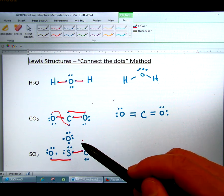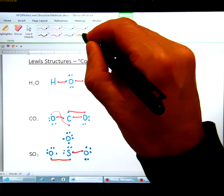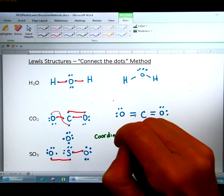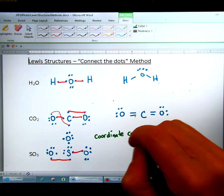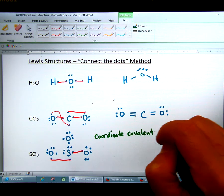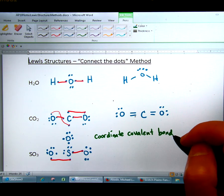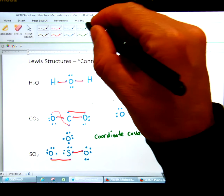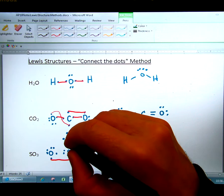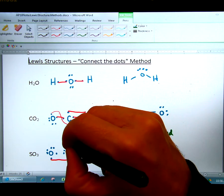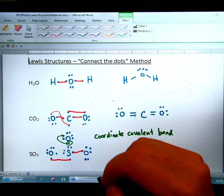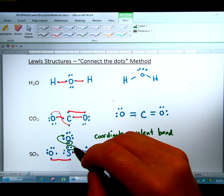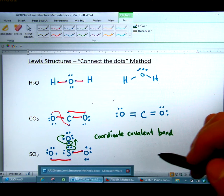So what we're going to do is we're going to learn something called a coordinate covalent bond. And a coordinate covalent bond is where one atom gives both electrons for the bond. So what you're going to do here is you're going to take this electron from this oxygen and move it right there next to that single one on the left. And then you're going to take this pair of electrons of the S and make that the bond with the O.